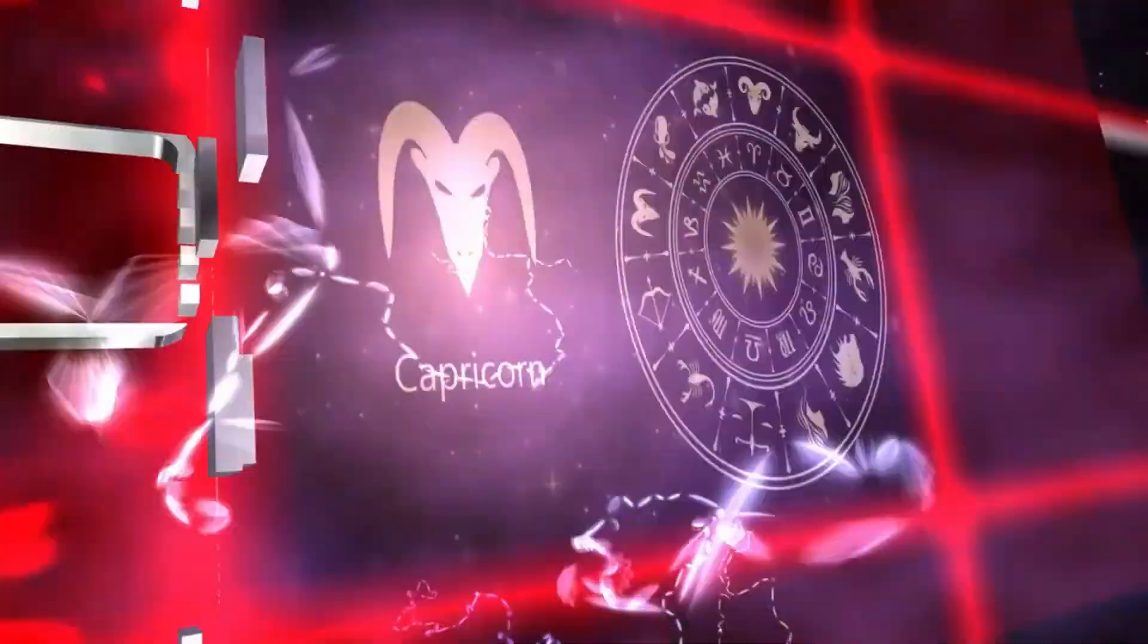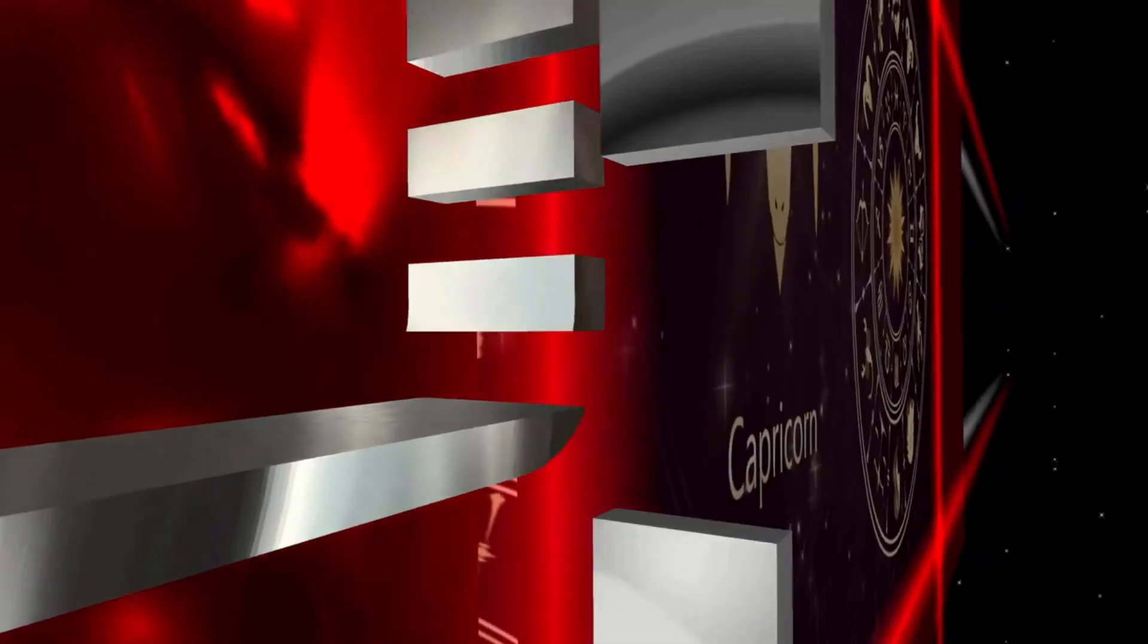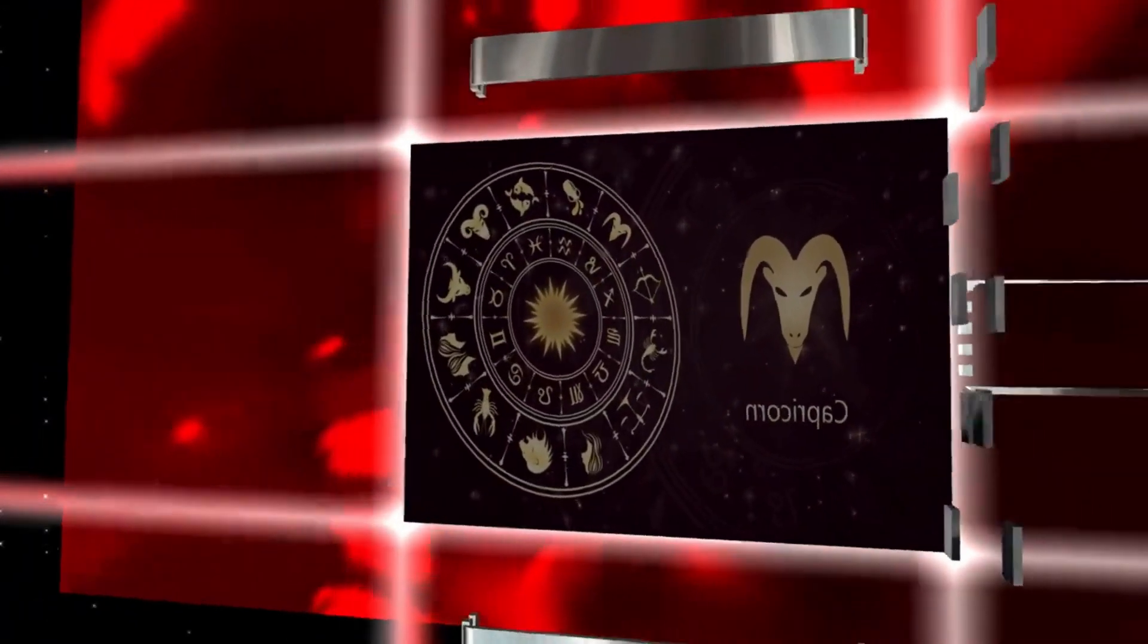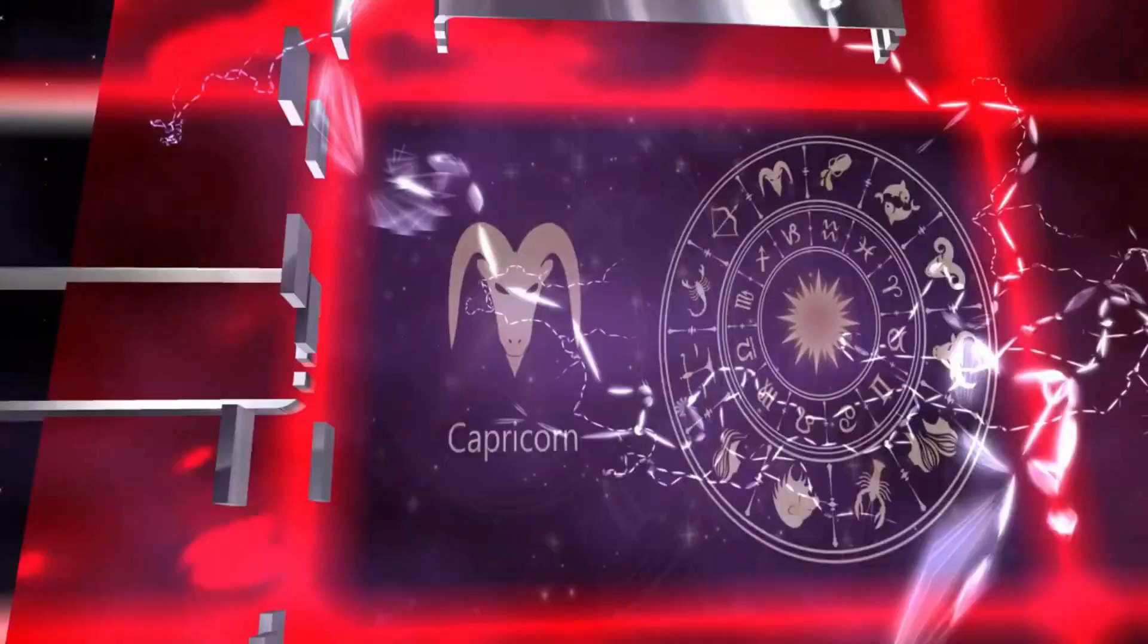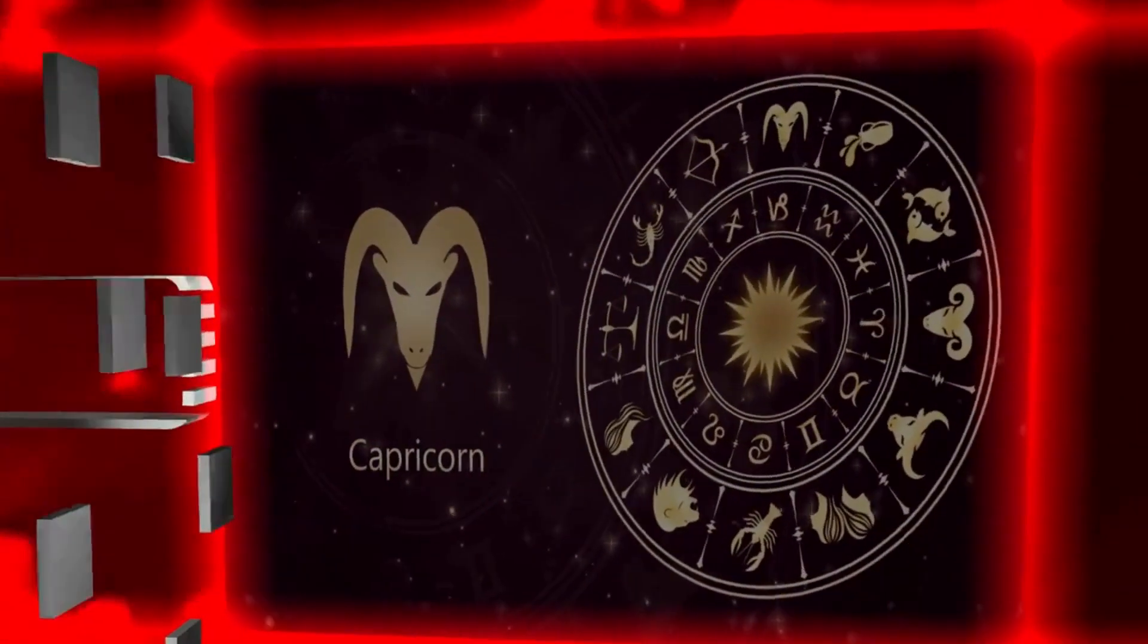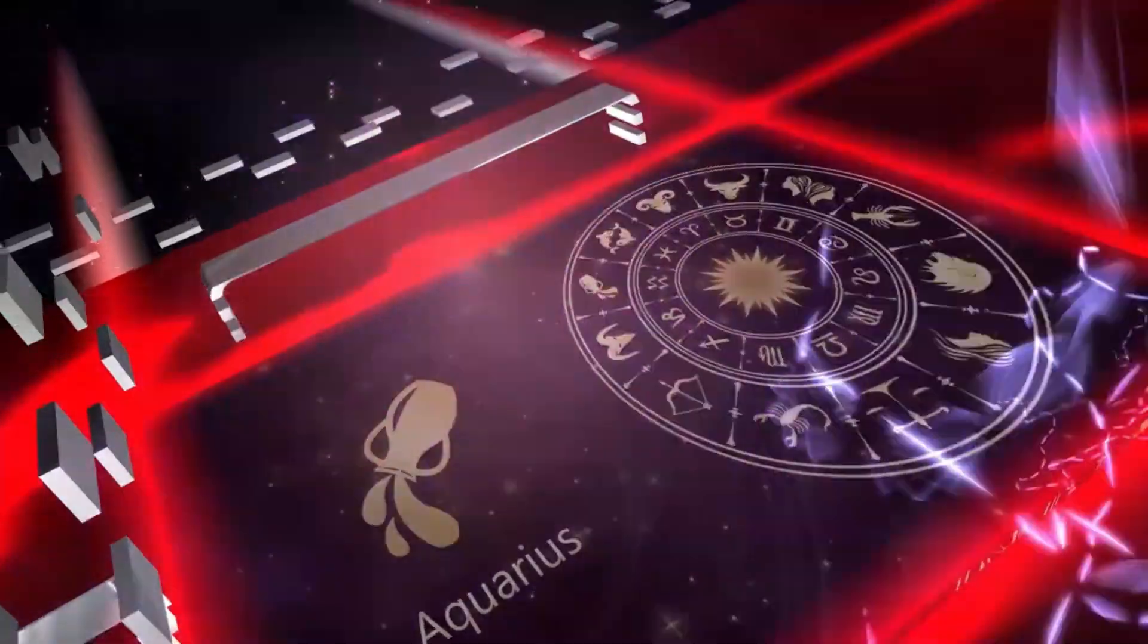Capricorn: The Moon in your opposite sign Cancer lights up the relationship sector of your chart, and you could be connecting with unexpected people as the Moon mingles with Uranus in fellow earth sign Taurus. Aquarius: You might be switching things up at home.